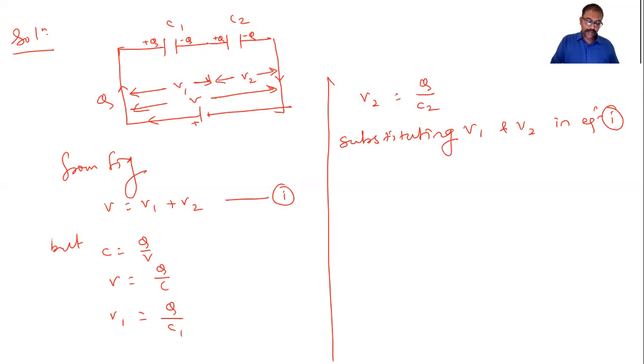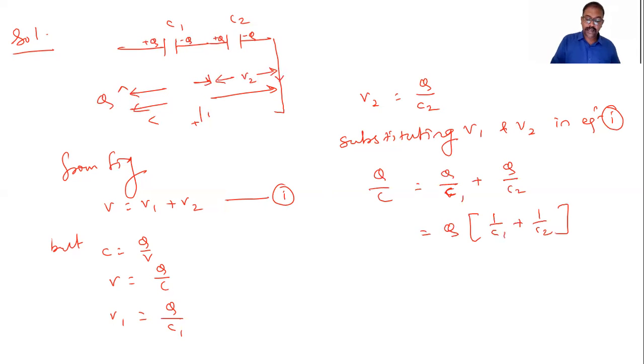So we get V equals Q by C1 plus Q by C2. We can take Q common, so in a bracket we can write 1 by C1 plus 1 by C2 and it equals Q by C. Now Q cancels out, so we get 1 by C equals 1 by C1 plus 1 by C2. This is the effective capacitance when we connect two capacitors in series.